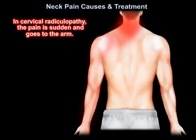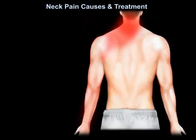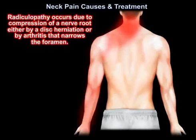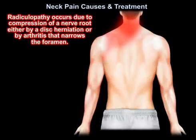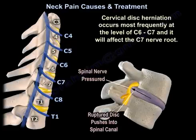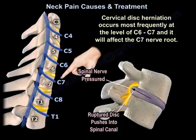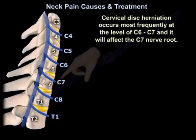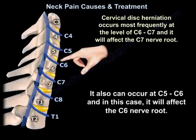In cervical radiculopathy, the pain is sudden and radiates to the arm. Radiculopathy occurs due to compression of the nerve root, either by disc herniation or by arthritis that narrows the foramen. Cervical disc herniation occurs most frequently at the level of C6-C7, affecting the C7 nerve root. It can also occur at C5-C6, in which case it will affect the C6 nerve root.